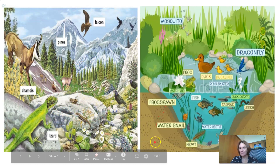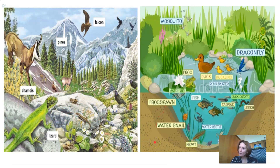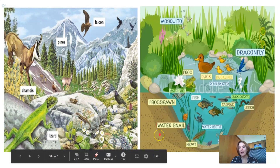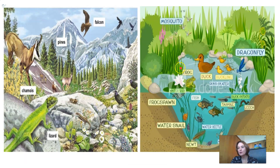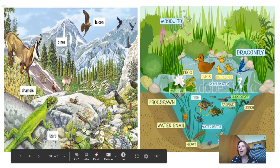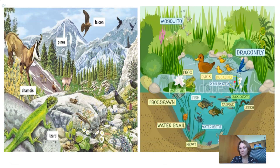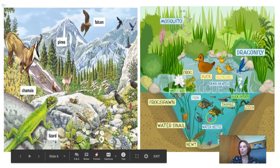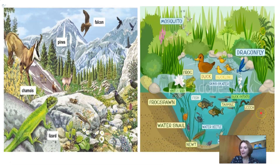A pond ecosystem is the same — it has its own plants and animals that rely on each other to survive. We have, for example, a mosquito, a duck, frogs, fish, and water plants in the pond as well. These are all living things. The non-living things would be the water, the soil, the air, and the temperature surrounding the pond.